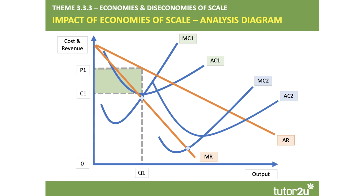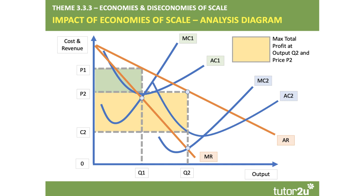For a given level of demand, the profit-maximising output rises to Q2. The price comes down to P2 and the cost per unit falls to C2, as you'd expect with scale economies. The maximum profit at Q2 is much, much bigger than before — the yellow area is substantially bigger than the green area. And the fall in price and higher output leads to an increase in consumer surplus for the final consumers of the product.